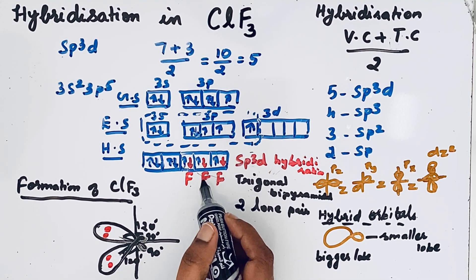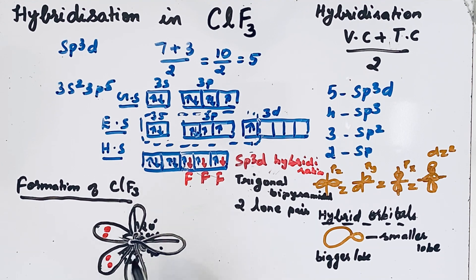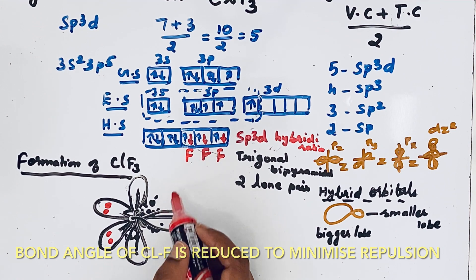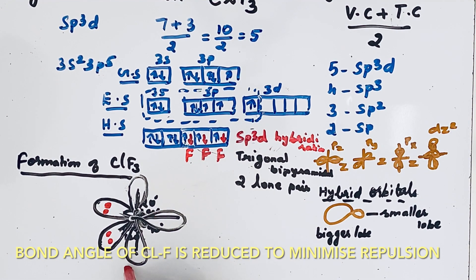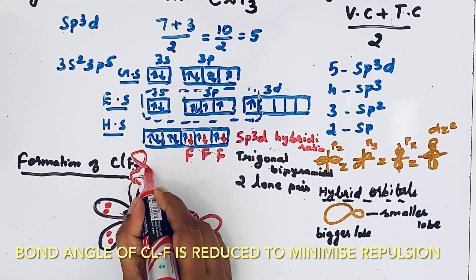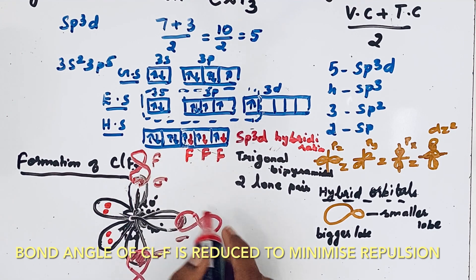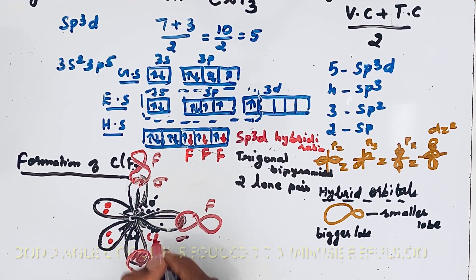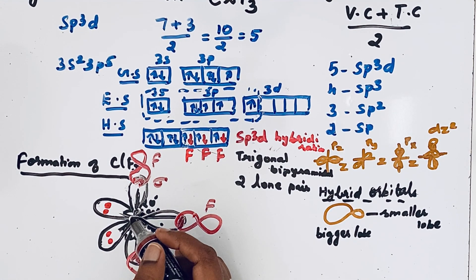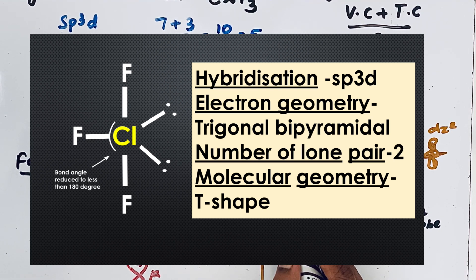Now we have three Cl–F bonds. These bonds form as the hybrid orbitals combine with the p orbital of the fluorine atom to form sigma bonds — one fluorine in the axial position above, one below, and one in the remaining equatorial position. Because of the two lone pairs in the equatorial plane, the molecular shape is distorted and the molecule attains a T-shape.